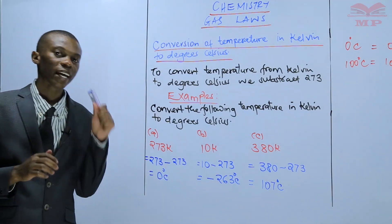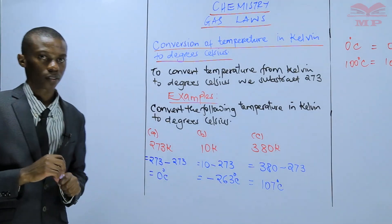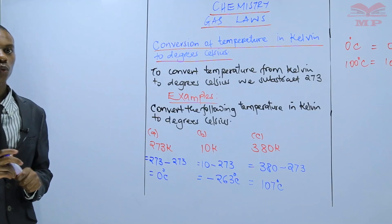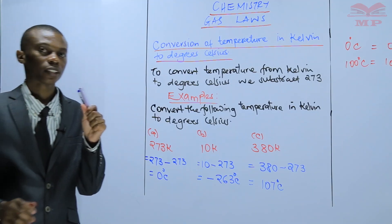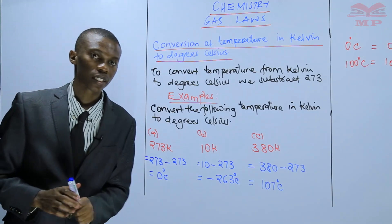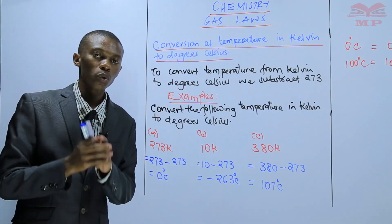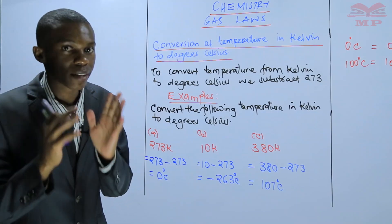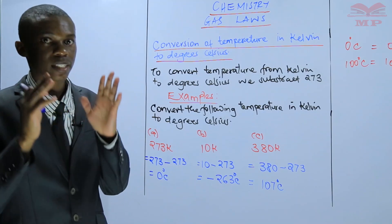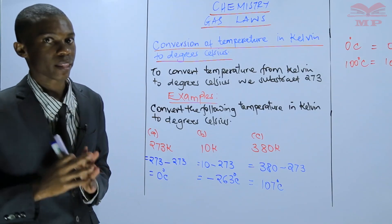So it is that simple. To convert Kelvin to degrees Celsius, always remember to subtract 273.